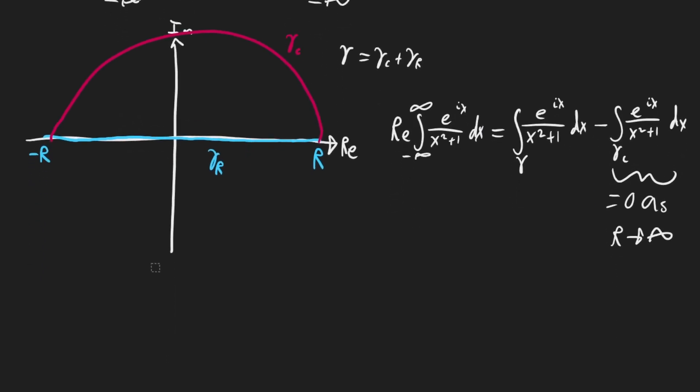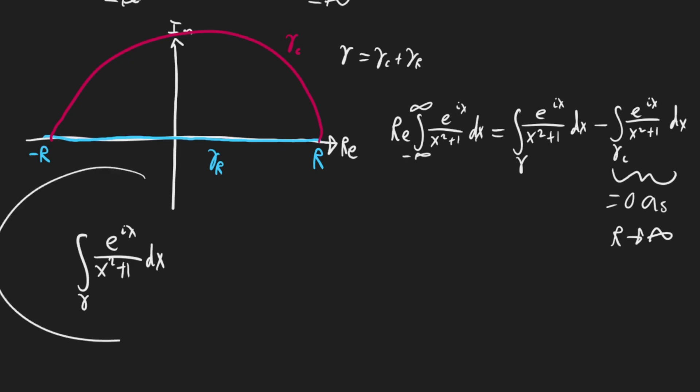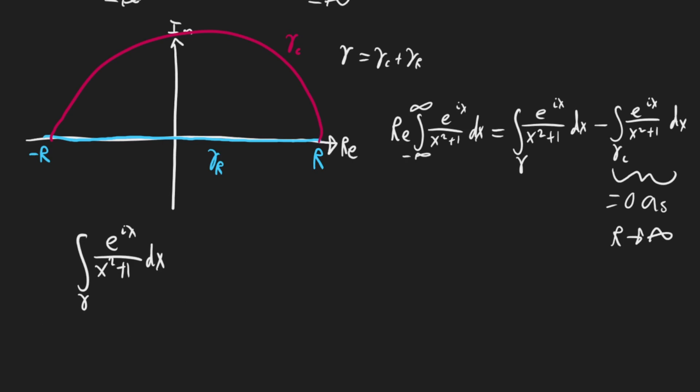So the beauty of this method is becoming clear — we've reduced the problem to just one contour integral. Let's focus on the integral of e^(ix) over (x² + 1) dx over the entire closed curve. We need to find the isolated singularities — points where the integrand is non-differentiable with no other such points nearby. The denominator x² + 1 equals zero at x = +i and x = −i. The singularity at +i lies inside our semicircle, so that's the one we need to handle.